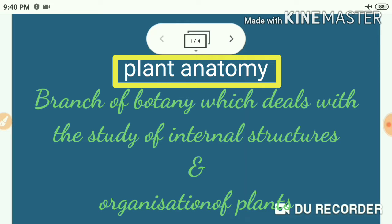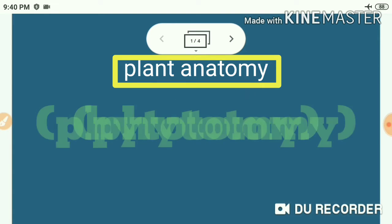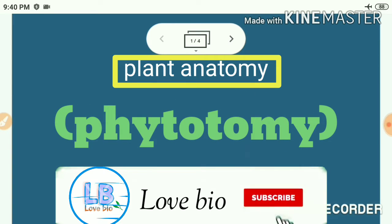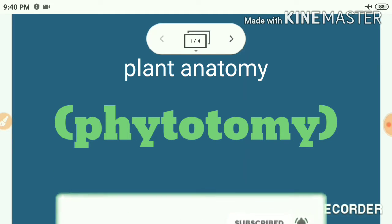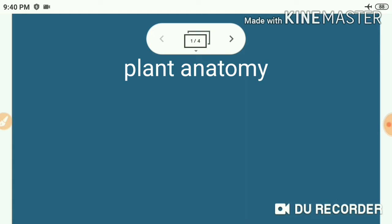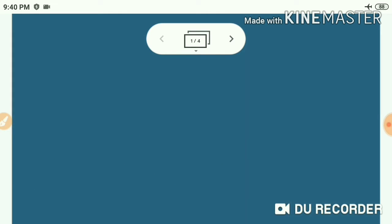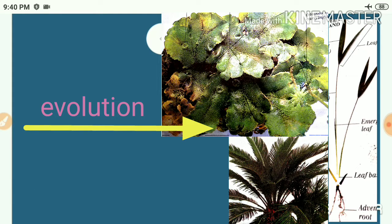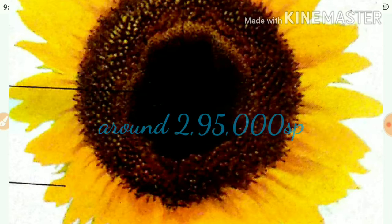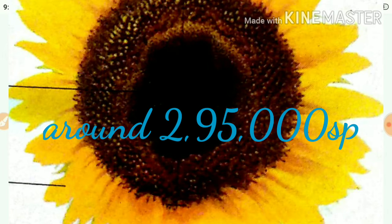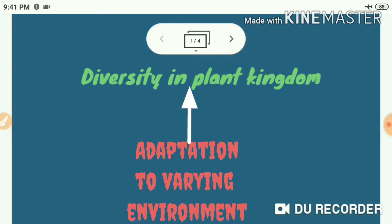Plant anatomy can also be called as phytotomy. The internal organization with reference to structure and function are commonly studied in this branch. N. Grew is known as father of plant anatomy. He was an English plant anatomist and physiologist. The plants we see today are the result of 470 million years of evolution. Flowering plants are the most diverse with around 2,95,000 species.